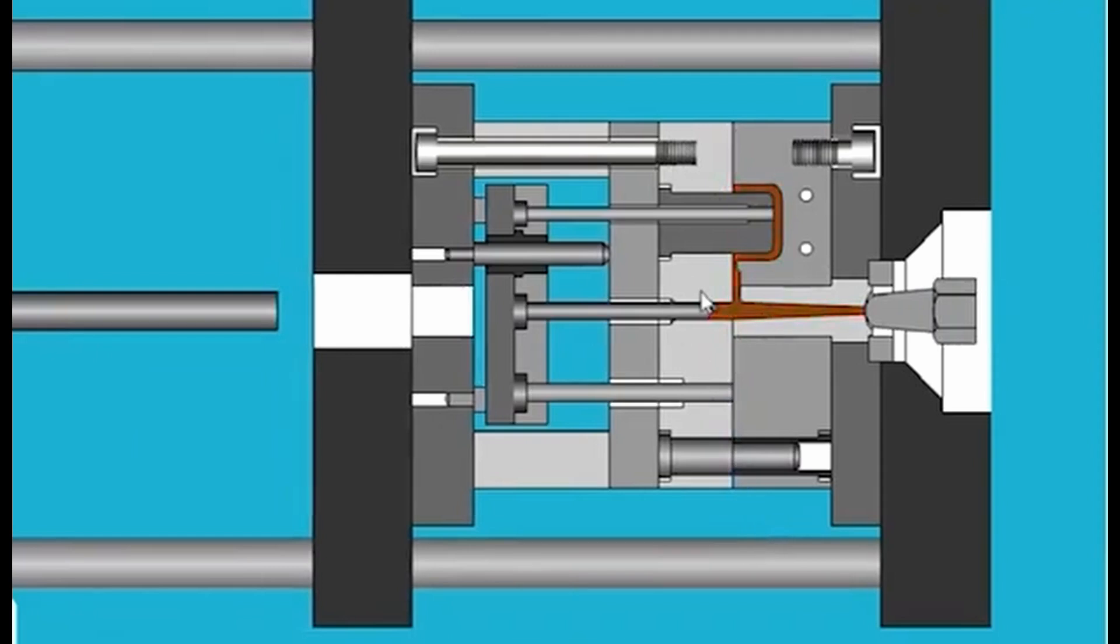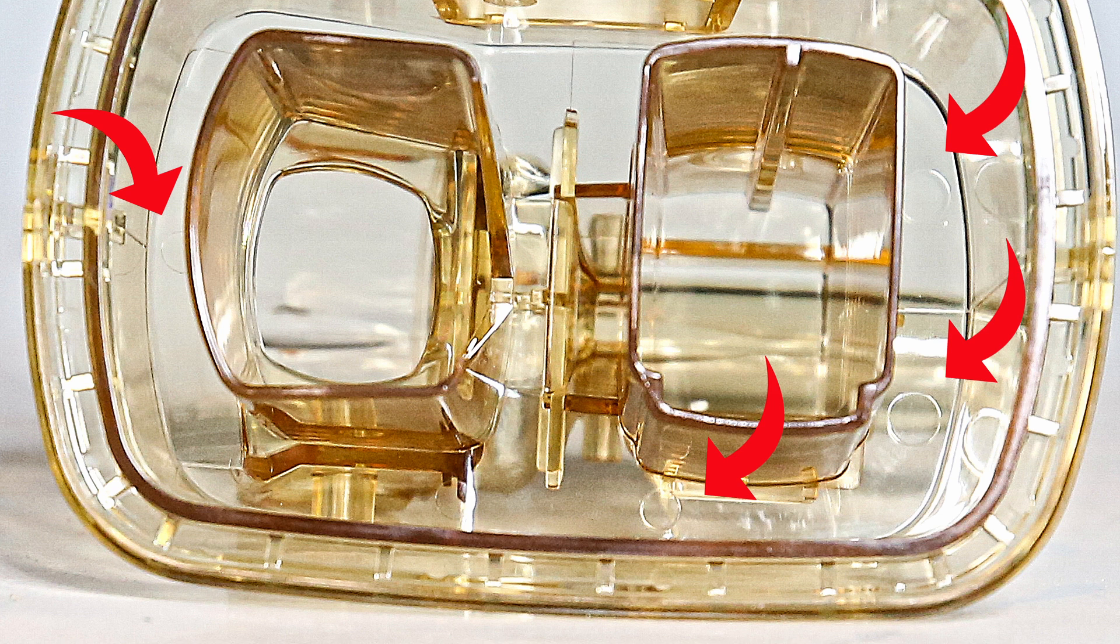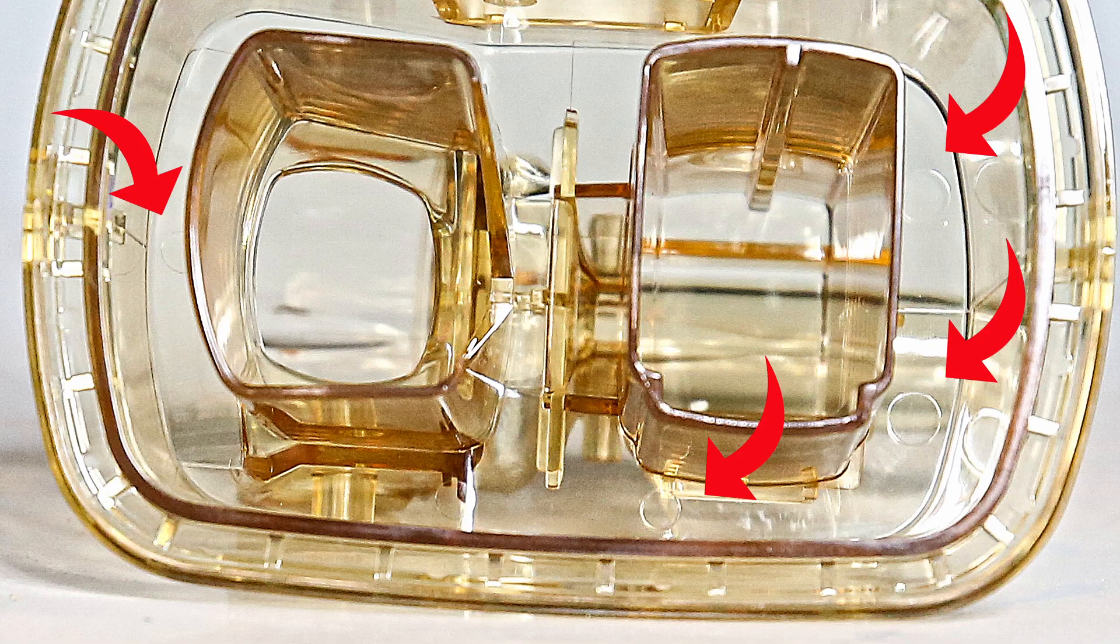Ejector pins push the part off the core after molding, but they leave a corresponding mark on the part's surface. Care should be taken to place pins in a balanced arrangement to ensure even distribution of force to avoid damaging the part or the pins themselves.